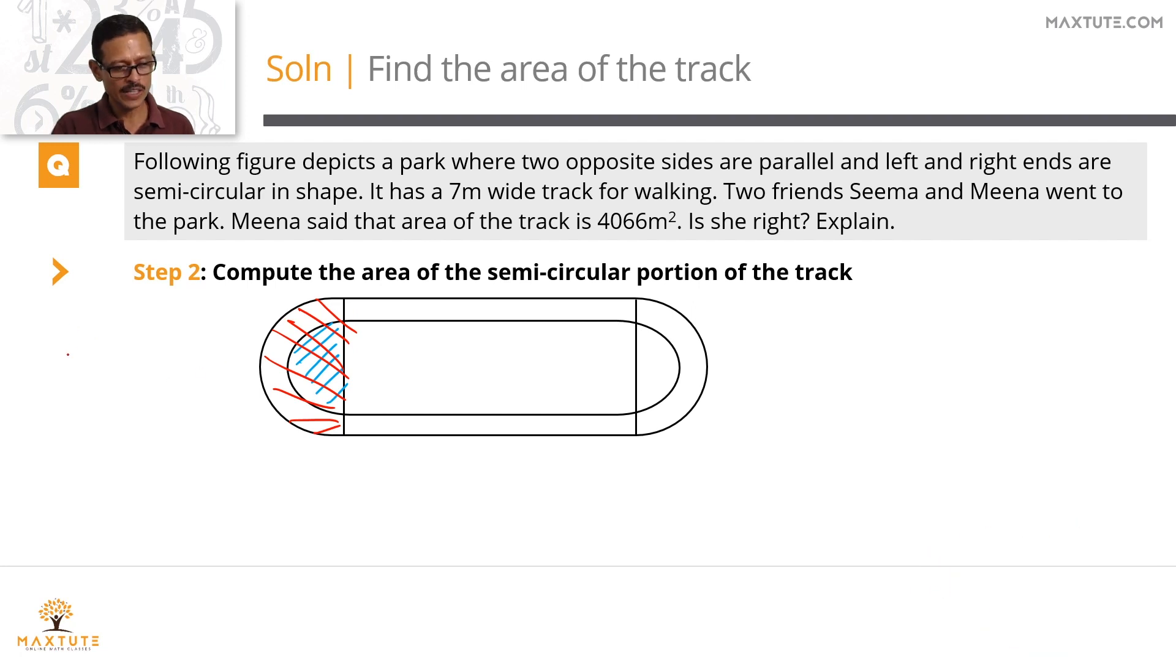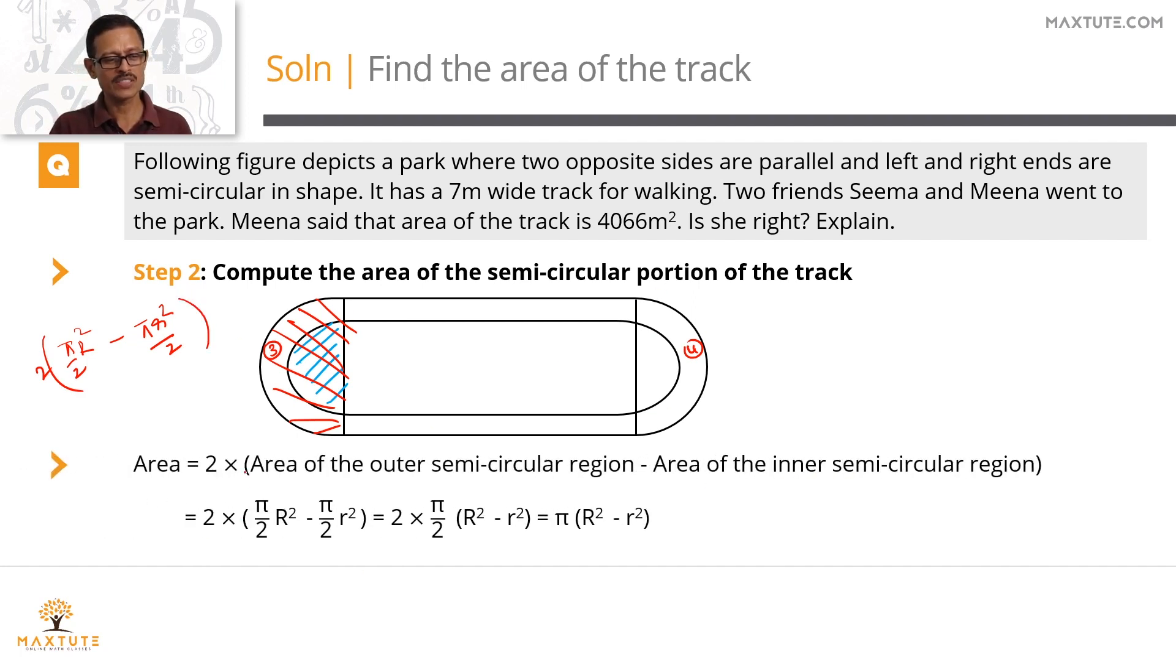So we'll initially find out the area of this larger semicircle. And from that, we'll subtract the area of the blue region. The larger semicircle, the area is going to be equal to πR²/2. The inner semicircle, the area is going to be equal to πr²/2. This is for region 3. Region 4 and region 3 have the same area. So 2 times this is going to give us the areas of the semicircular walking track. That's what I've said. 2 times area of the outer semicircular region, which is shaded in red, minus area of the inner semicircular region, which is shaded in blue.